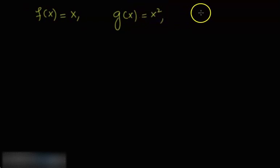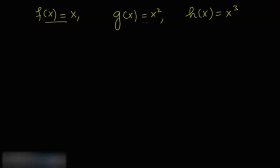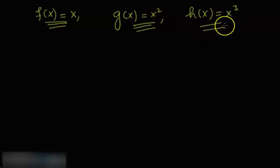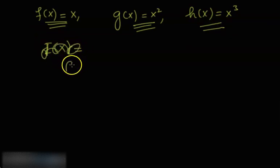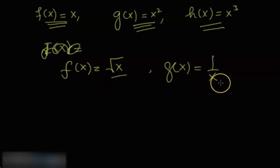Bismillahirrahmanirrahim, assalamu alaikum. We're going to continue the discussion of the library of parent functions. We have already discussed some of the functions and their graphs, like f(x) = x (linear or identity function), g(x) = x² (quadratic or squaring function, polynomial of degree two), h(x) = x³ (cubic function, polynomial of degree three), the square root function f(x) = √x, and the reciprocal function whose graph looks like a shifted parabola.